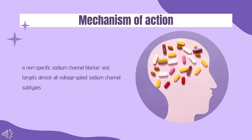Mechanism of Action: Although several scientists were convinced that fenytoin altered sodium permeability, it wasn't until the 1980s that this phenomenon was linked to voltage-gated sodium channels. Fenytoin is often described as a nonspecific sodium channel blocker and targets almost all voltage-gated sodium channel subtypes. More specifically, fenytoin prevents seizures by inhibiting the positive feedback loop that results in neuronal propagation of high-frequency action potentials.